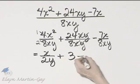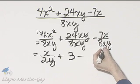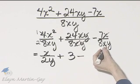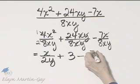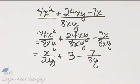And then minus, here the x's divide out, or again you can think of this as x raised to the power of 1 minus 1, but that would be x to the 0, or 1, but I have 7 over 8y. There is my result.